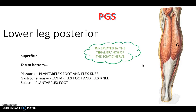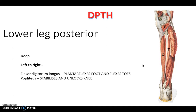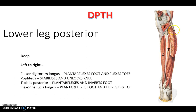Going deeper still in the posterior lower leg, from left to right we have DPTH. Flexor digitorum longus, which flexes the toes and plantarflexes the foot. Popliteus, located in the popliteal fossa just behind the kneecap, which stabilizes and unlocks the knee. Tibialis posterior - remember tibialis anterior averted the foot, while tibialis posterior plantarflexes and inverts the foot. And flexor hallucis longus, which flexes the big toe and plantarflexes the foot.